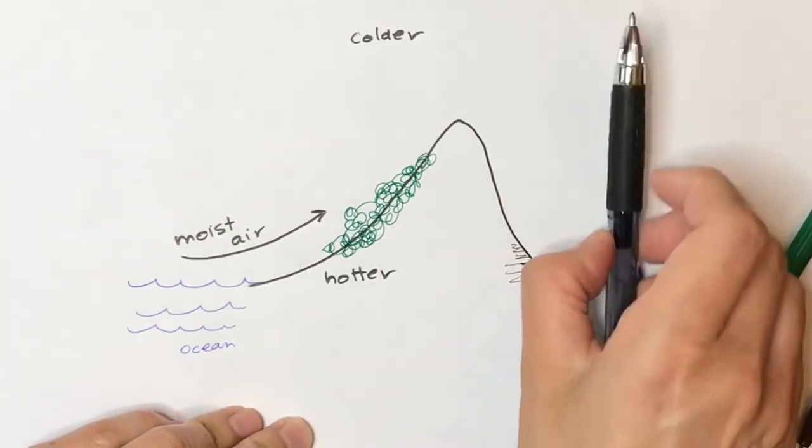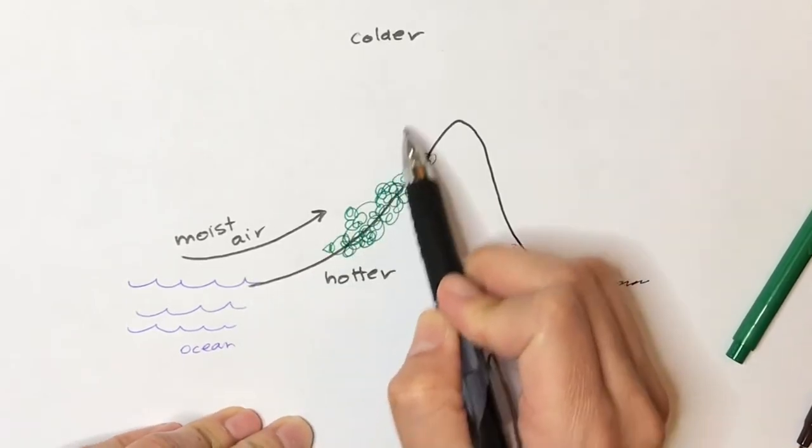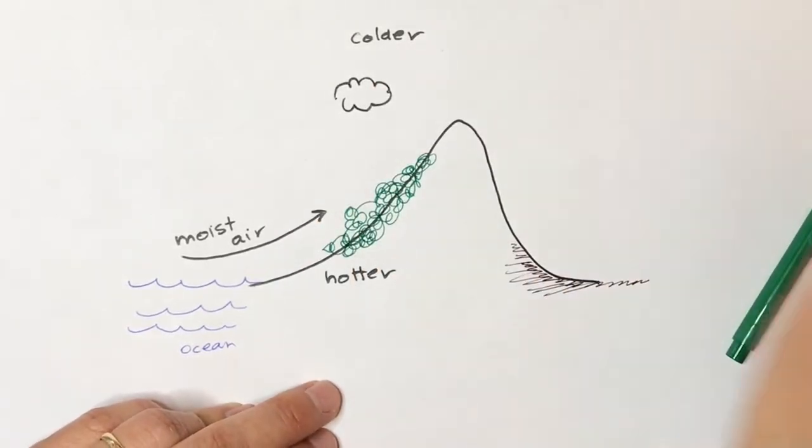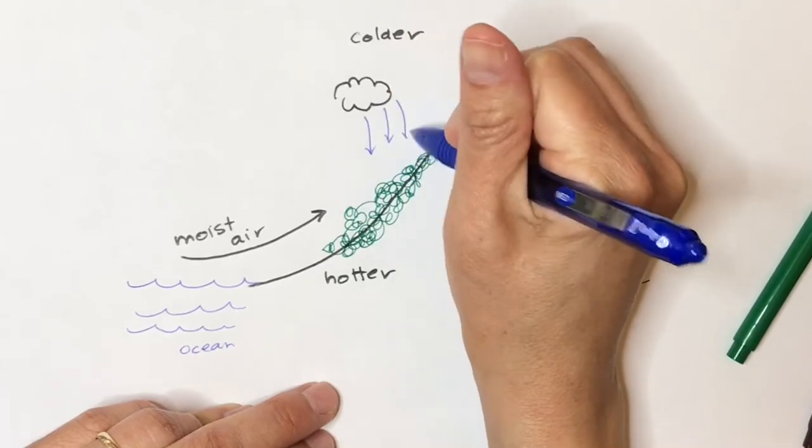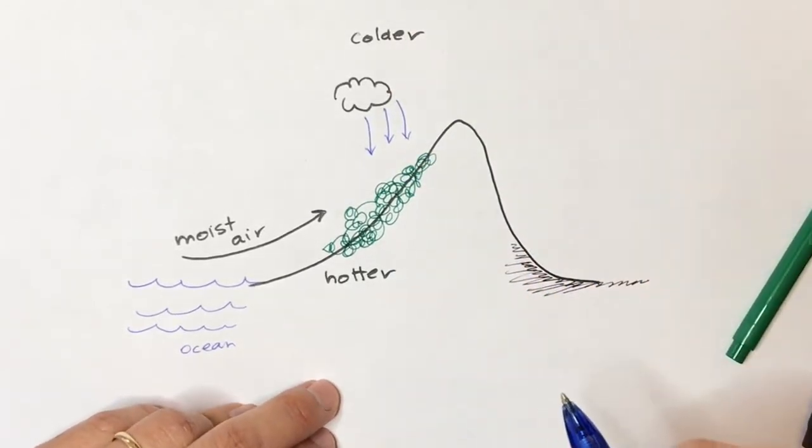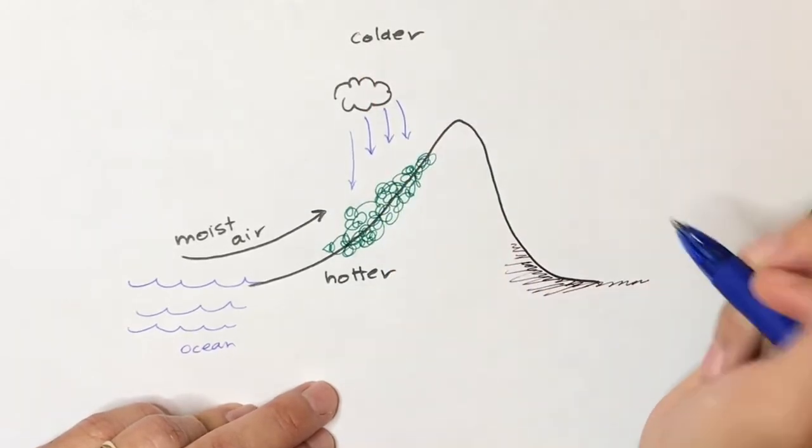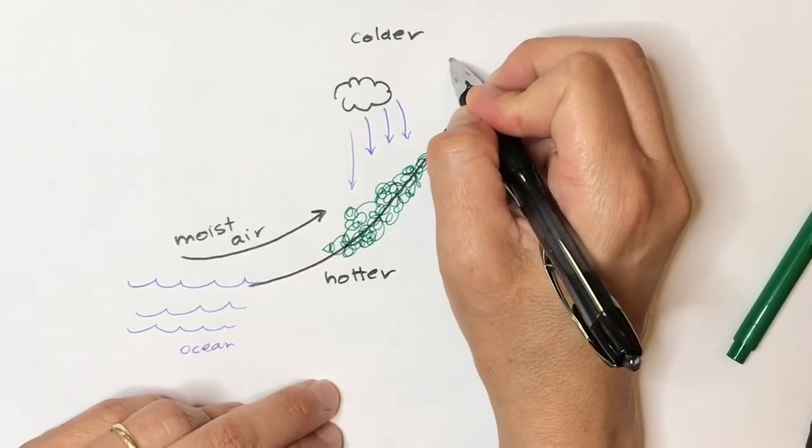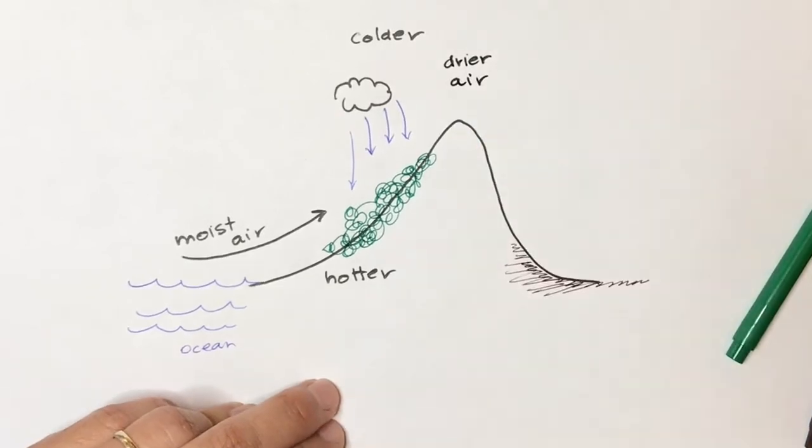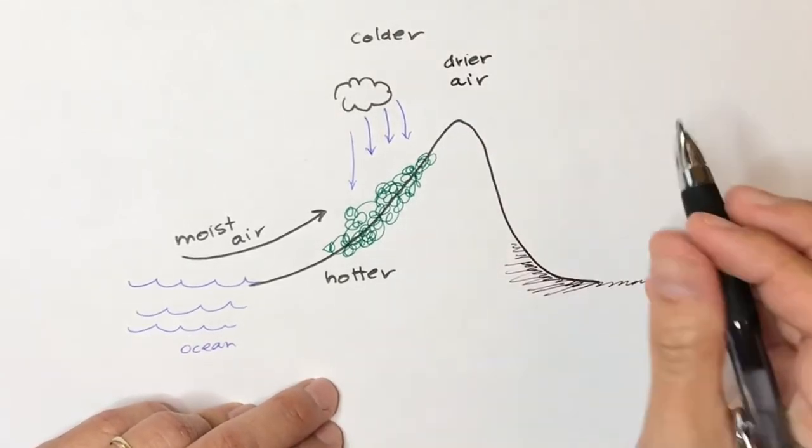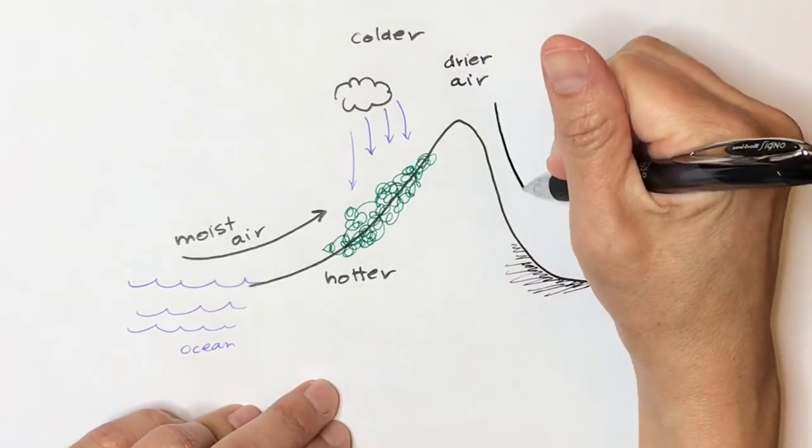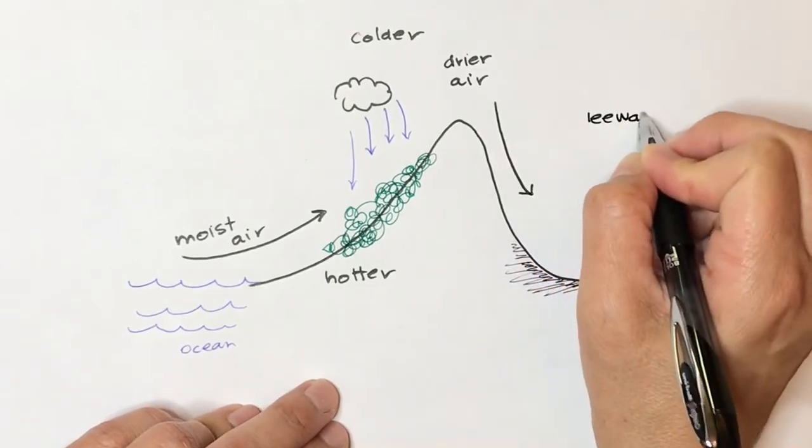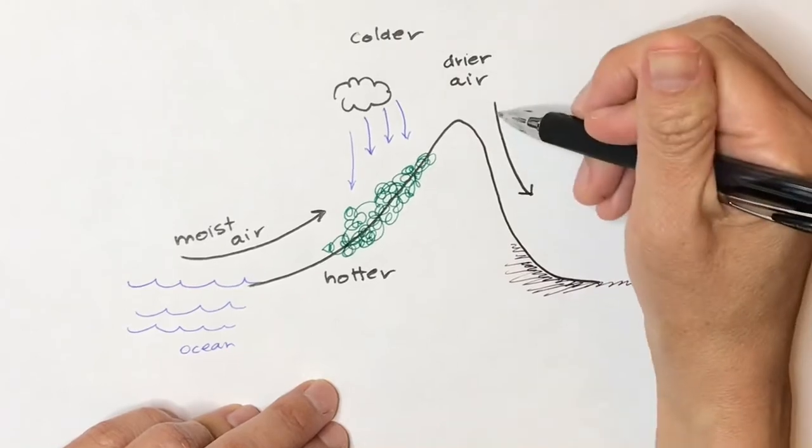So this moisture is going up, and as it gets colder it's going to start dropping off the water. Here's a little cloud, and as it's getting colder and colder, less and less water can be held in this cloud. It's sort of like squeezing out a sponge over this land. So now when we get to the top, the air is pretty dry. It's already squeezed out all of its water. Now as the air moves down the other side of the mountain, which we call the leeward side of the mountain, it's starting to get hotter.